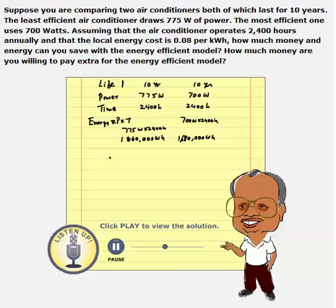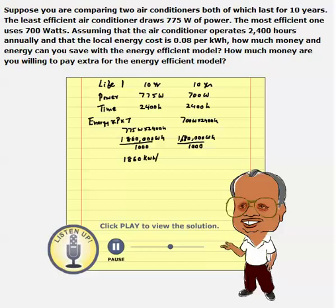We need to convert this into kilowatt-hours because we buy electricity by the kilowatt-hour. So dividing both by 1,000, we get kilowatt-hours. This air conditioner will consume 1,860 kilowatt-hours per year, and the other one would consume 1,680 kilowatt-hours per year.